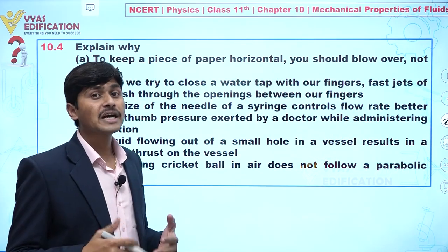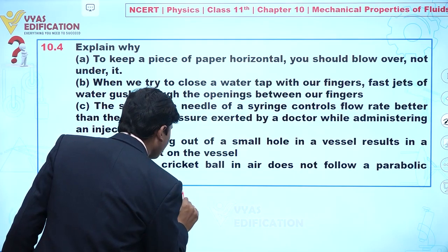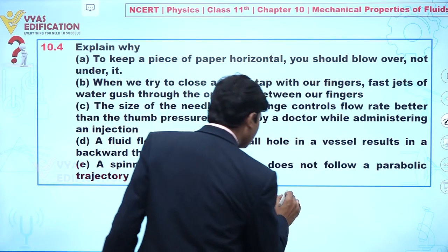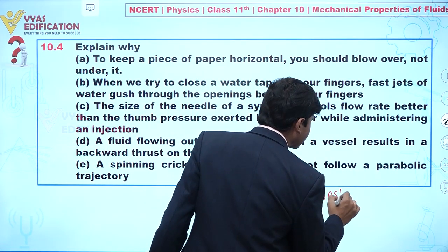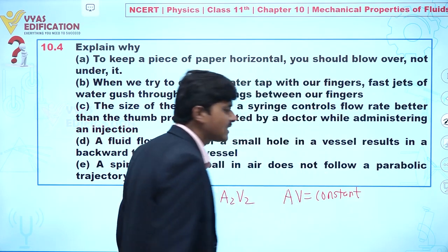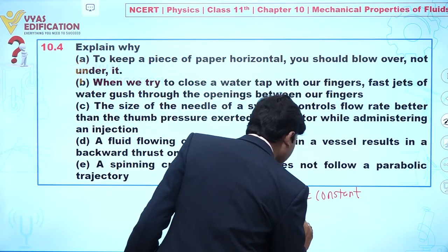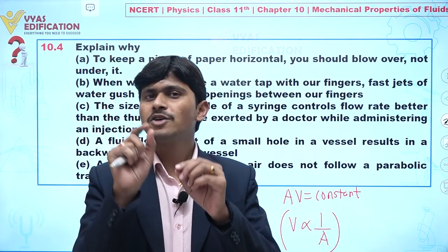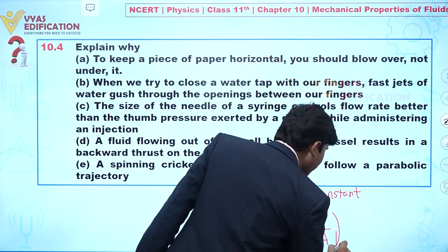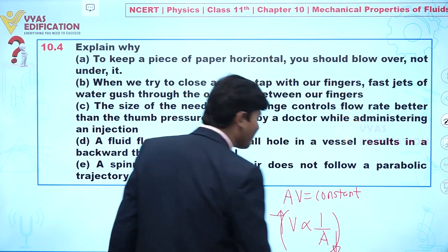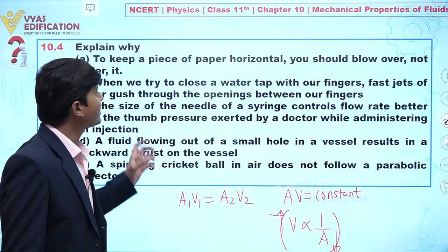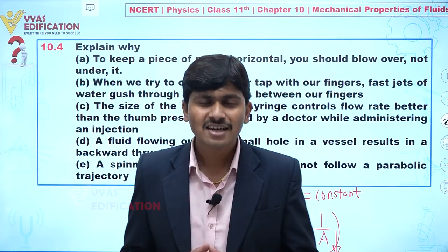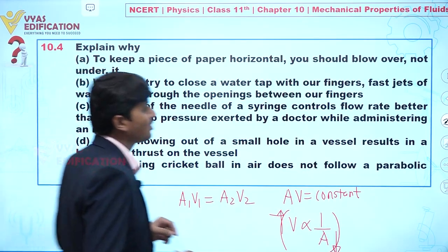Using the continuity equation: A₁V₁ = A₂V₂, so the product AV is constant. This means velocity V is inversely proportional to area A. When we make a small opening with our finger, we are decreasing the area. When area decreases, velocity increases. So when we try to close a water tap with our finger, the speed of the water increases. This is all about part (b).